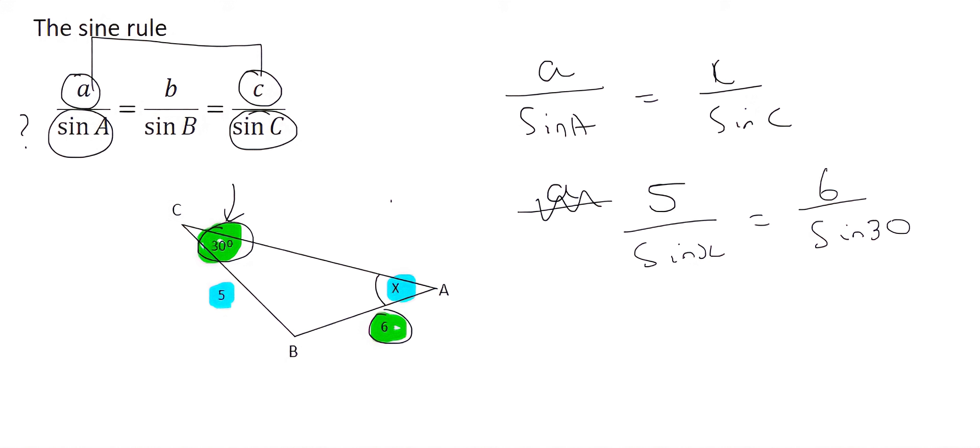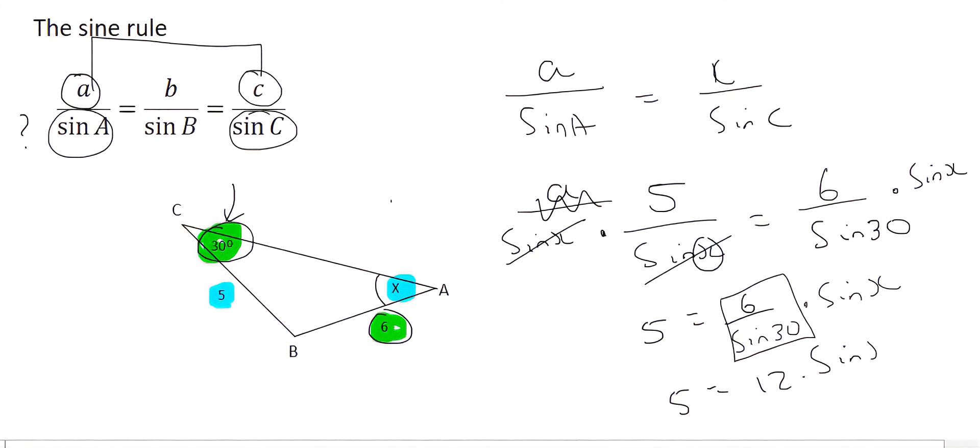Now we need to somehow get this X by itself. So what we're going to do is times both sides by sin X. And what you do to the one side, you do to the other side. The reason we do that is so that these cancel. And so what we end up with is 5 equals to 6 over the sin of 30 times by the sin of X. Now 6 over sin 30, you can type that in on your calculator, but that's just going to give you 12 times by sin X.